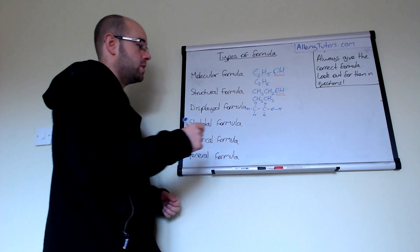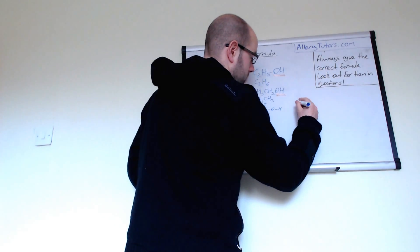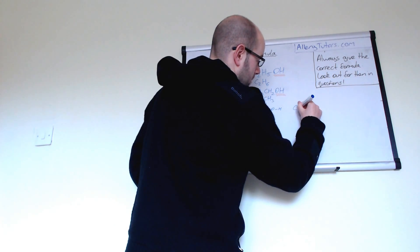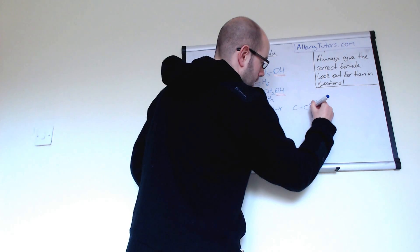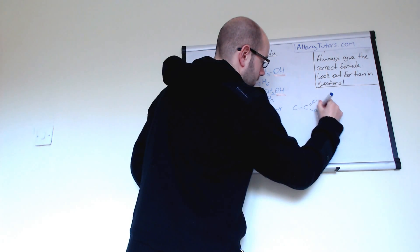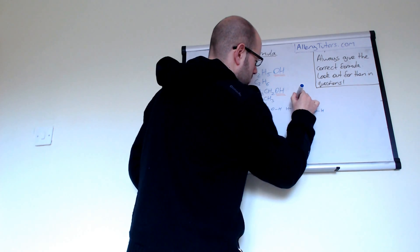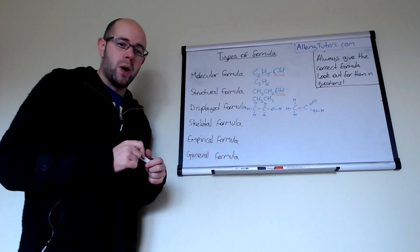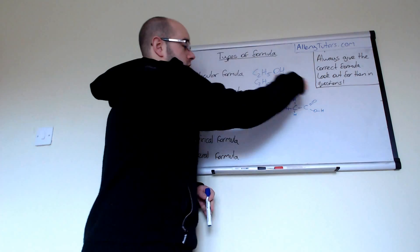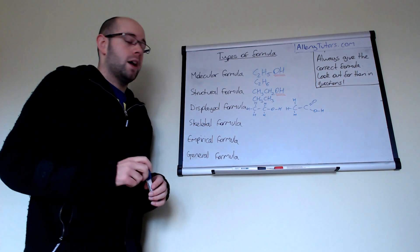This can be quite useful for when you're doing things like you might have something like carboxylic acid, so you might have something like ethanoic acid and it just shows you exactly where your hydrogens are and also makes you think about how many bonds around each carbon.